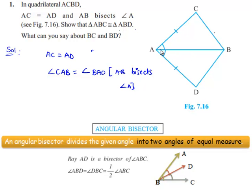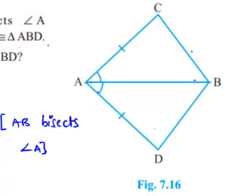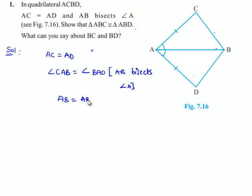And if we consider AB is common side for both the triangles ABC and ABD, i.e., AB is equal to AB, common side for both the triangles ABC and ABD.